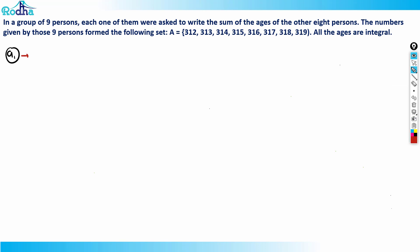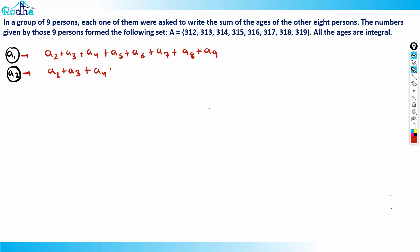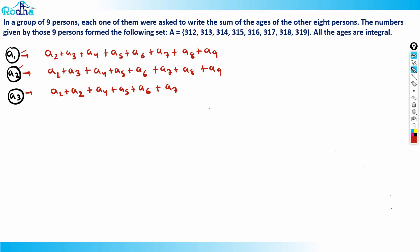The sum stated by a1 is: a2 + a3 + a4 + a5 + a6 + a7 + a8 + a9. Then person a2 states: a1 + a3 + a4 + a5 + a6 + a7 + a8 + a9. And person a3 states: a1 + a2 + a4 + a5 + a6 + a7 + a8 + a9, since a3 does not include their own age.